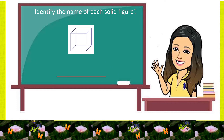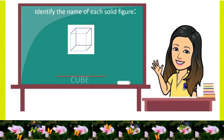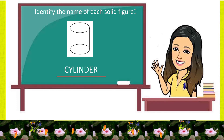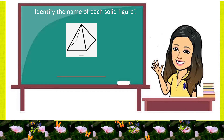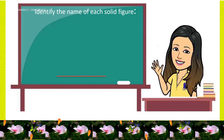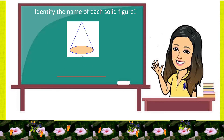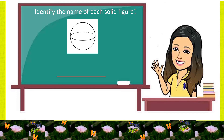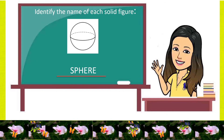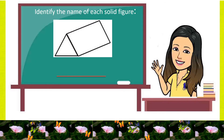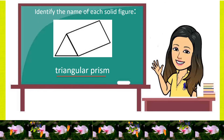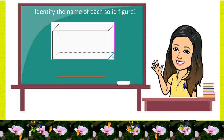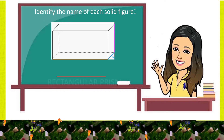Now give me the name of each solid figure. Number 1 — this is a cube. Number 2 — great, this is a cylinder. Next — good, this is a pyramid. Number 4 — nice answer, this is a cone. Next — excellent, this is a sphere. Next — fantastic, this is a triangular prism. Last — very good, this is a rectangular prism.